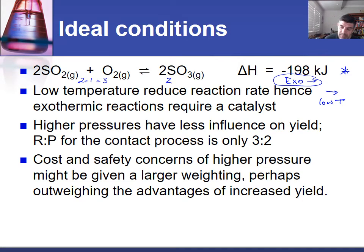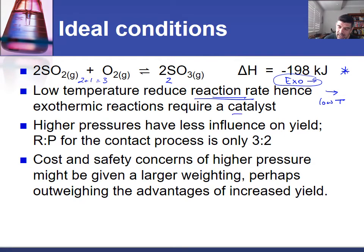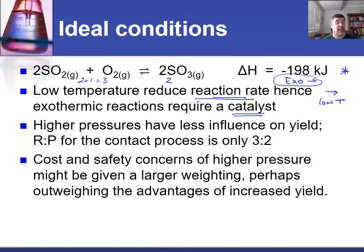The problem with low temperatures is they also affect reaction rates. As a consequence, most industrial reactions that are exothermic in the forward direction usually require a catalyst to overcome the issue of lower temperatures favoring the forward direction and increasing yield while decreasing the overall reaction rate. The catalyst counters this by increasing the rate of reaction at those lower temperatures.